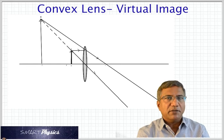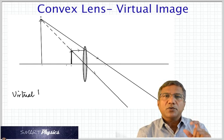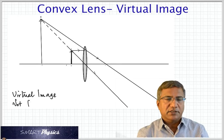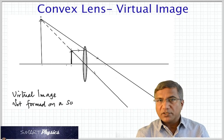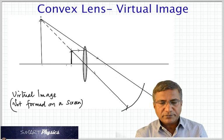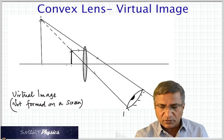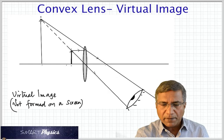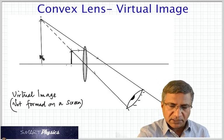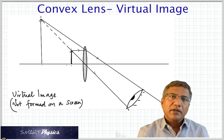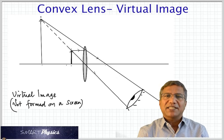That's the imaginary part which makes the image virtual, so there is no actual image — it's a virtual image. All virtual images are upright, and a virtual image cannot be formed on a screen. That's where the position of the eye is, so somebody looking from here will be able to see the image magnified and upright.